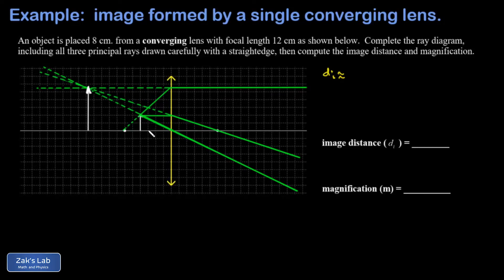So I have 2, 4, 6, 8, 10, 12, 14, 16, 18, 20. Almost 22 centimeters to the left of this lens is where the image is going to form. So I'll go ahead and just crudely approximate this and say it's an image distance of negative 21.8 centimeters.